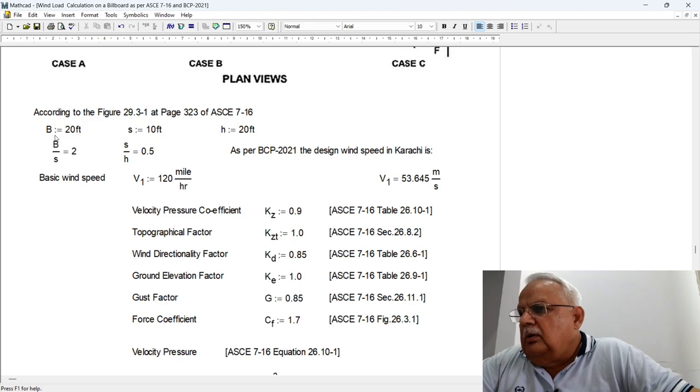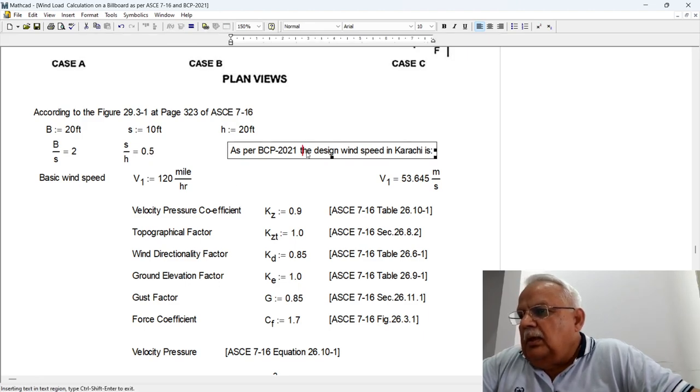Same figure is reproduced over here. As per the assumption, the width of the billboard is 20 feet, the height of the billboard itself is 10 feet. Overall height is 20 feet, so B upon S is 2 and S upon H is 0.5.